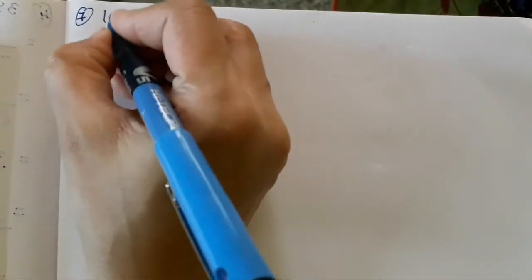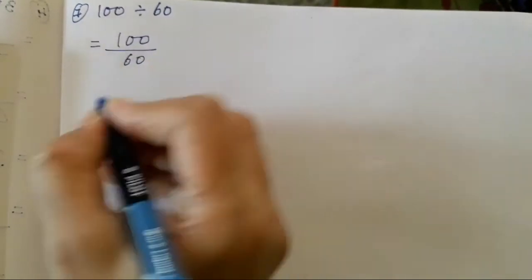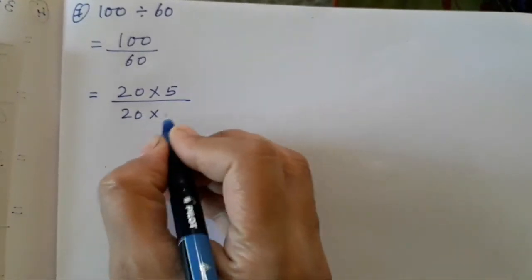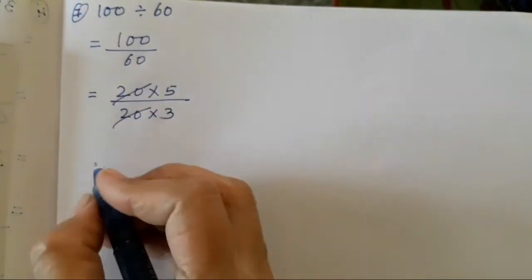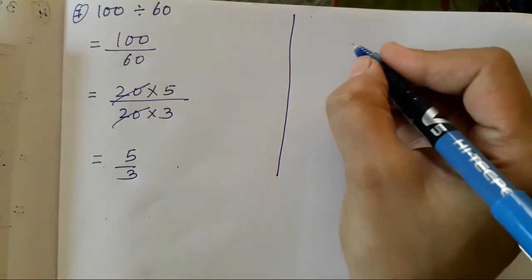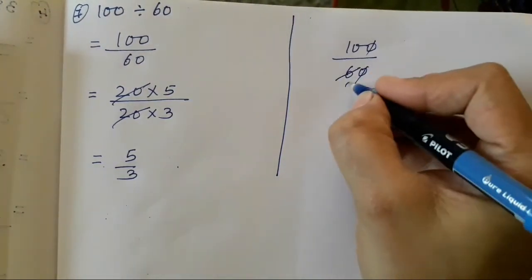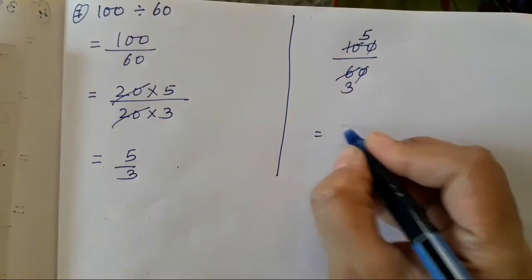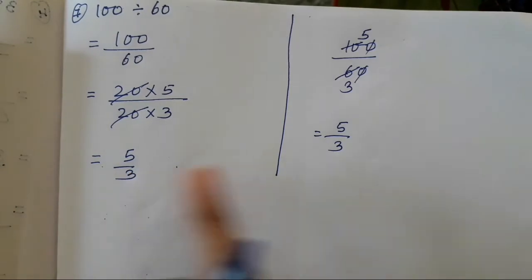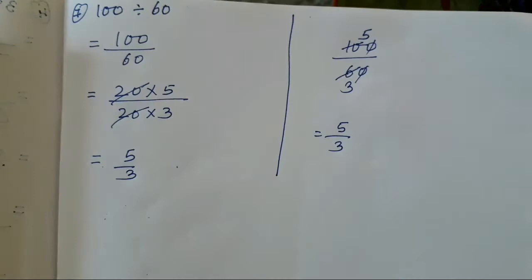The seventh sum is 100 divided with 60. This is also very easy — you can split it as 20 into 5 and 20 into 3. So 20 and 20 is going to get reduced; only 5 upon 3 will be left. Over here also — cut the zero, 2 threes are 6, 2 fives are 10. So 5 upon 3. Remember, you don't have to do both steps — only one step, whichever you find easy.